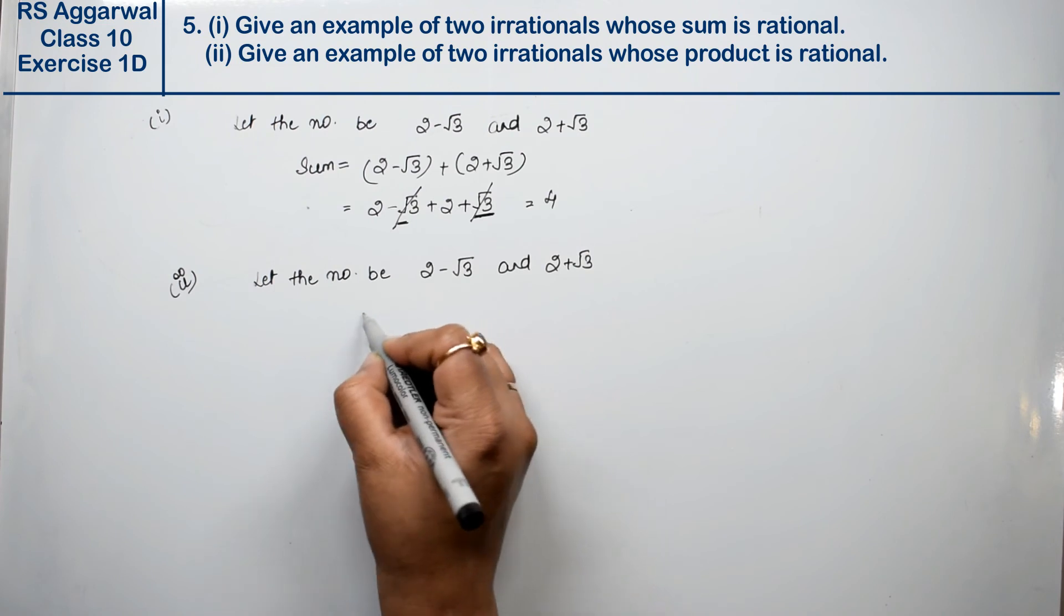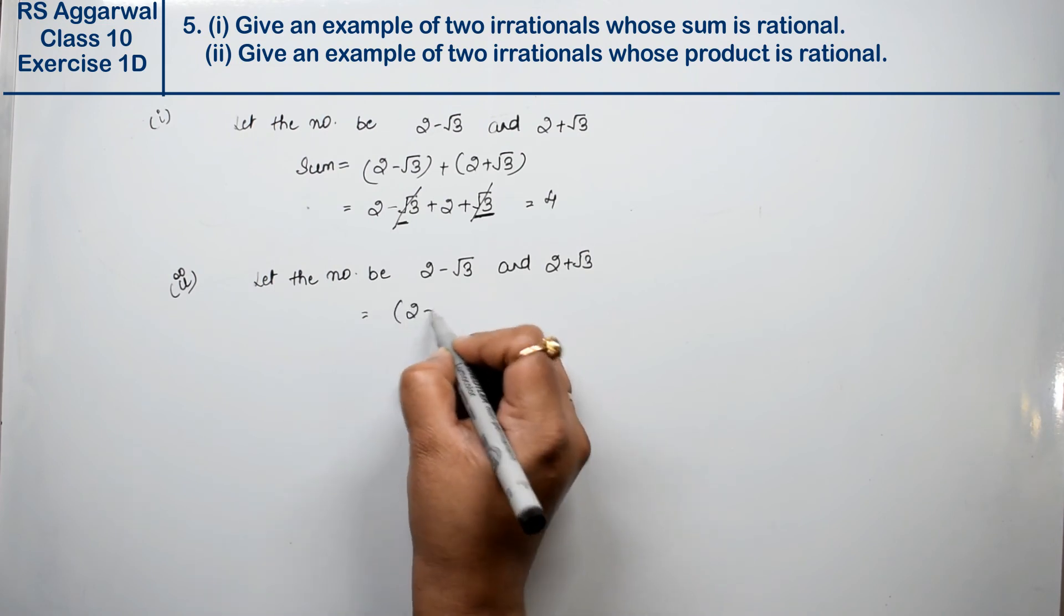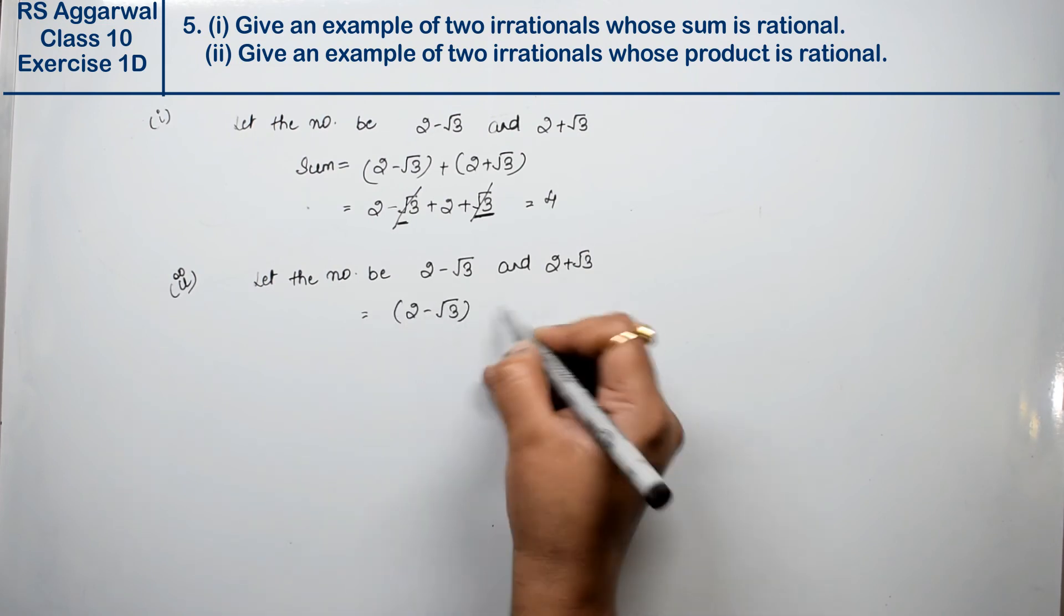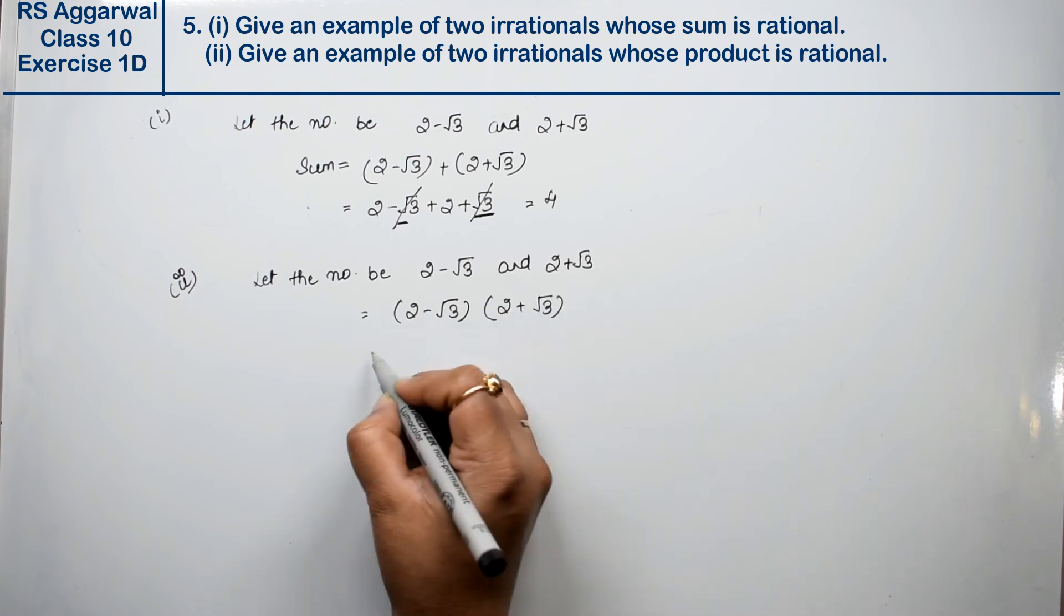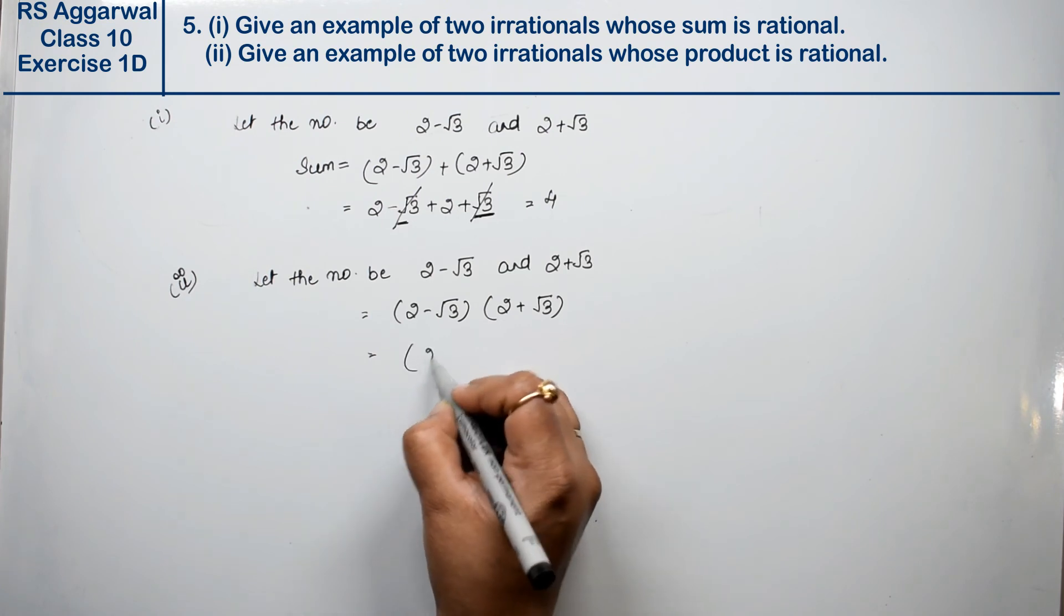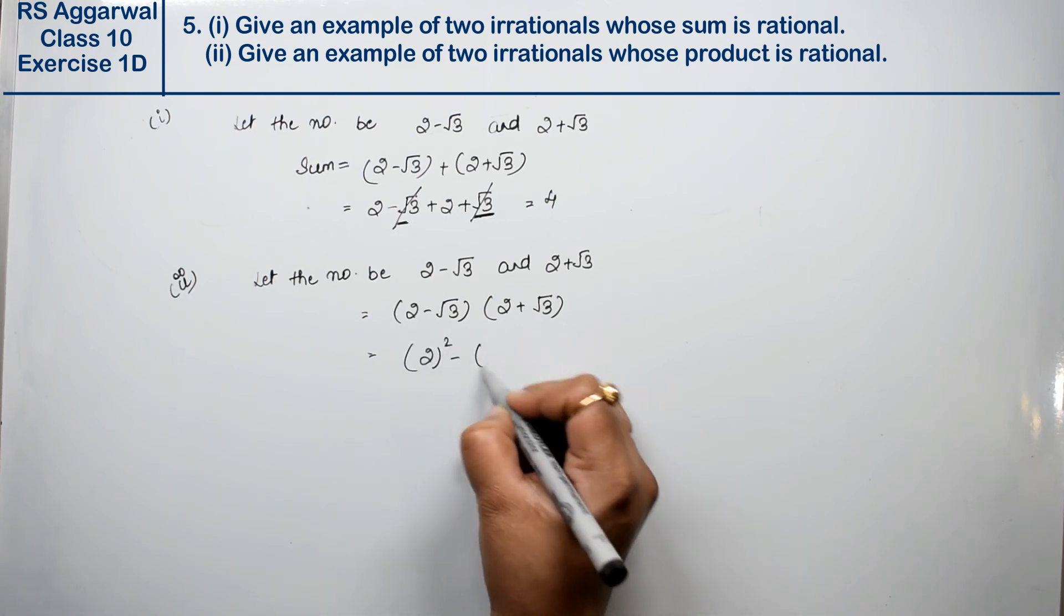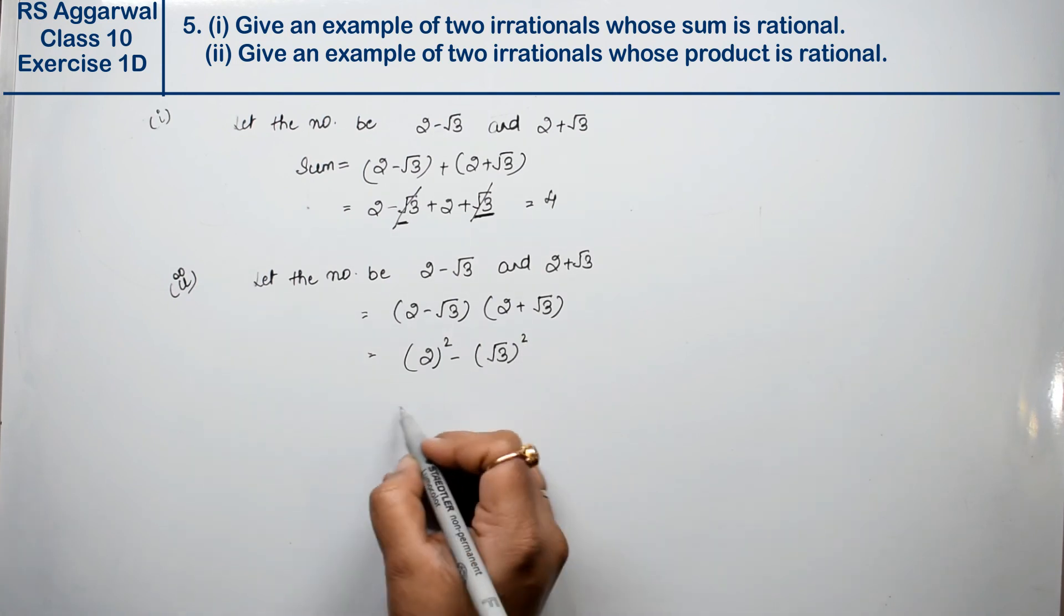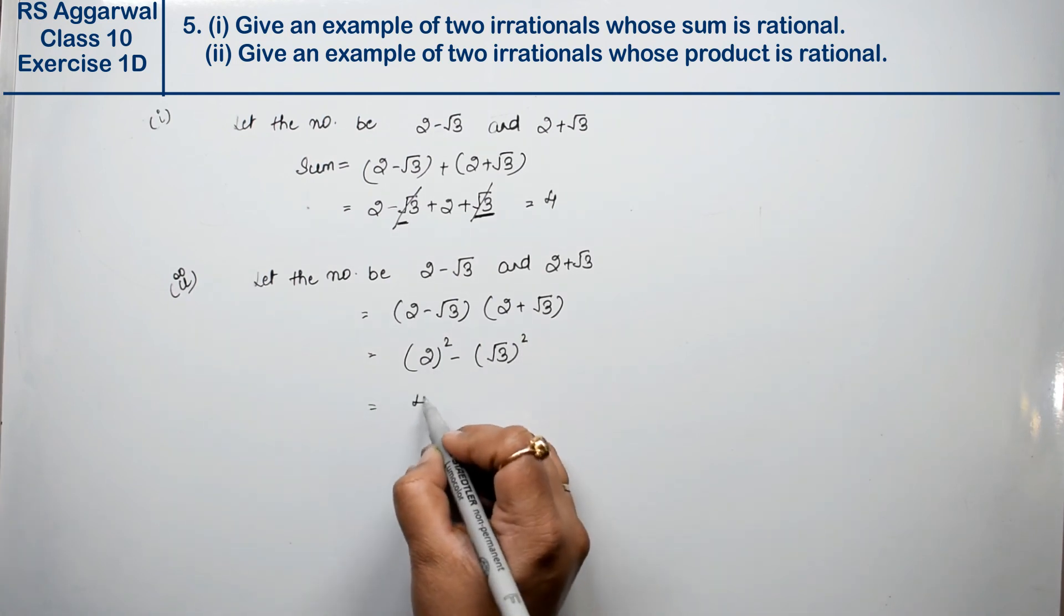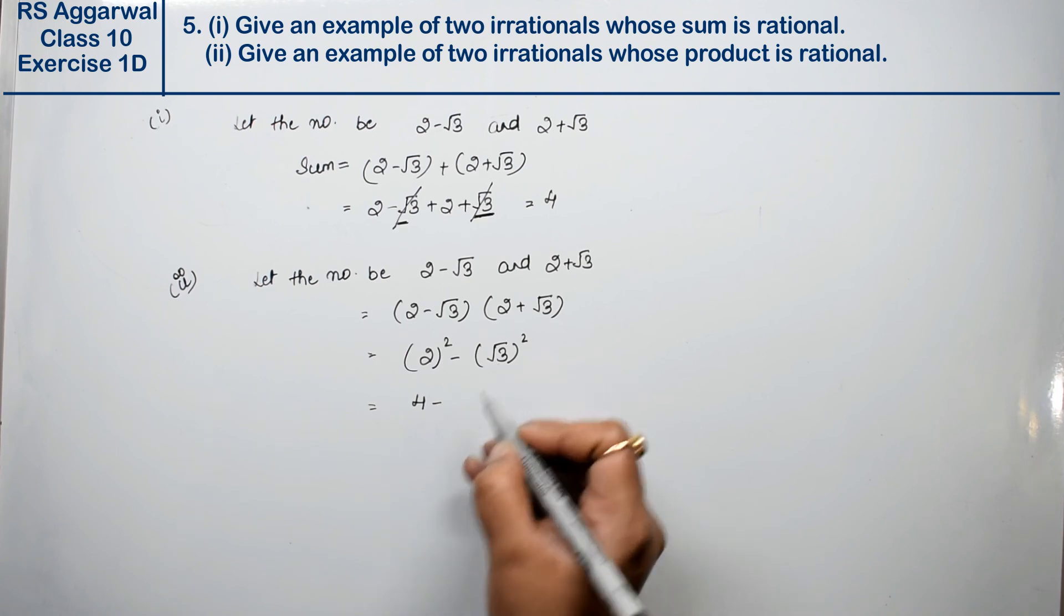So we have to take the product, which is (2 minus root 3) times (2 plus root 3). What was the answer? One came.